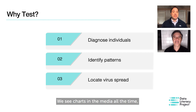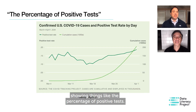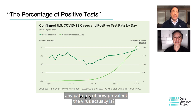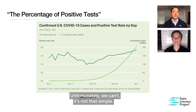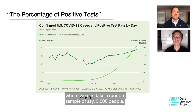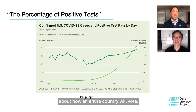We see charts in the media all the time showing things like the percentage of positive tests. But is that really telling us anything about the entire population? Can we use that one number to identify any patterns of how prevalent the virus actually is? Unfortunately, we can't. It's not that simple.